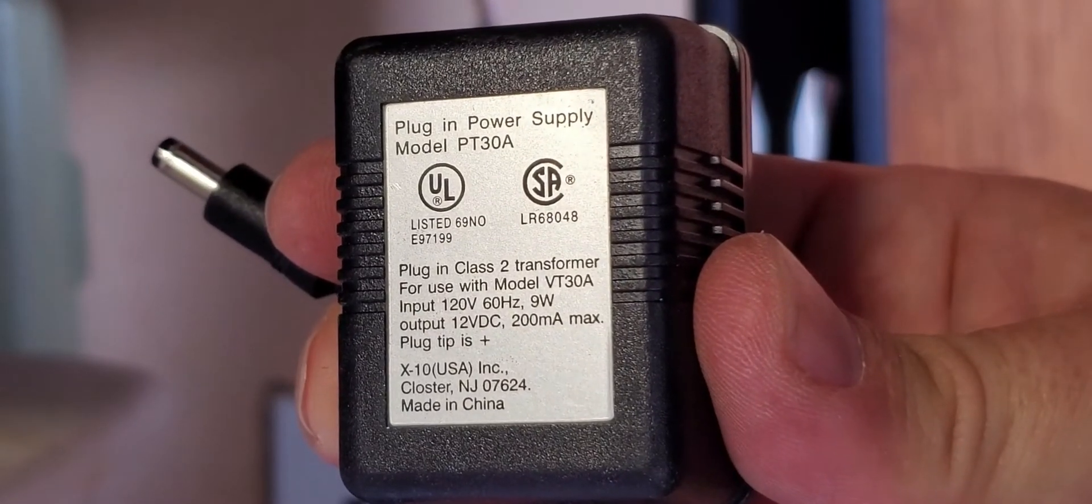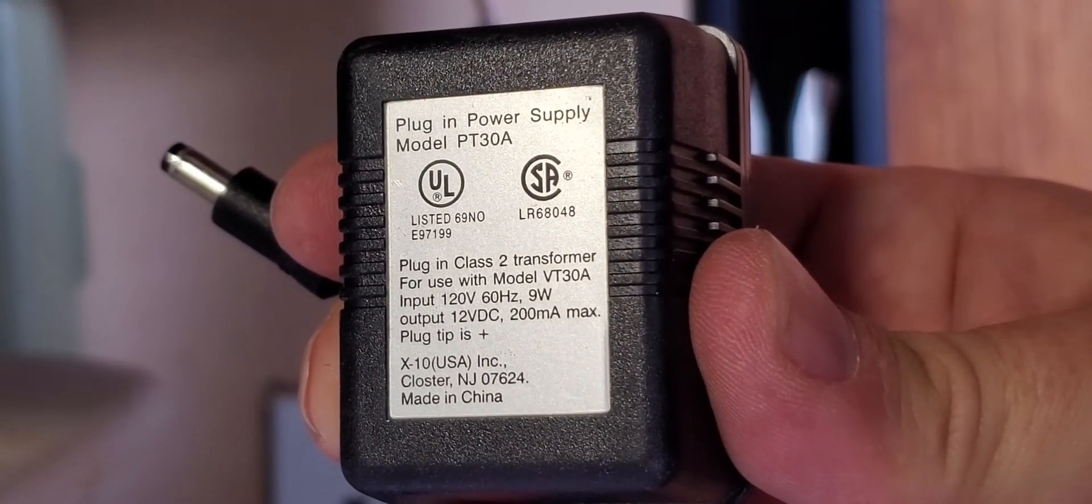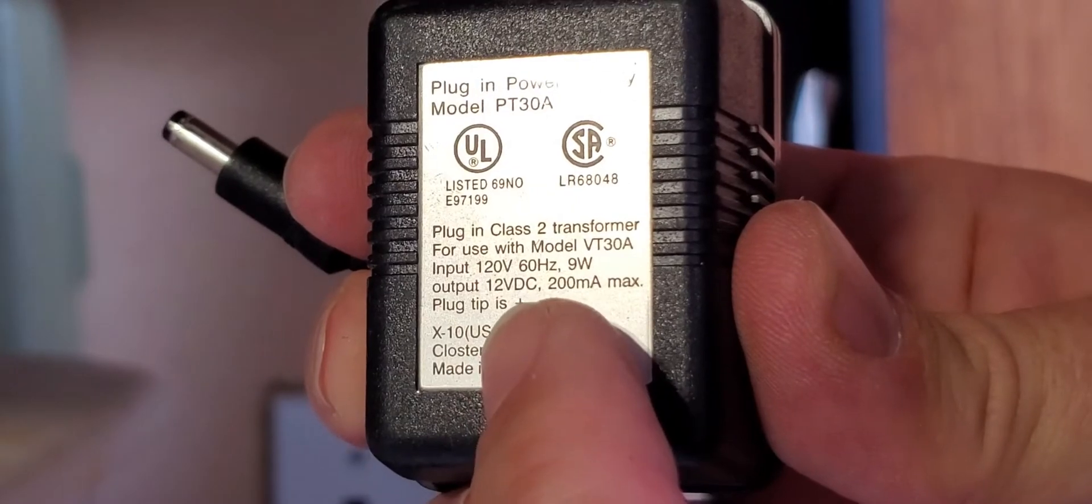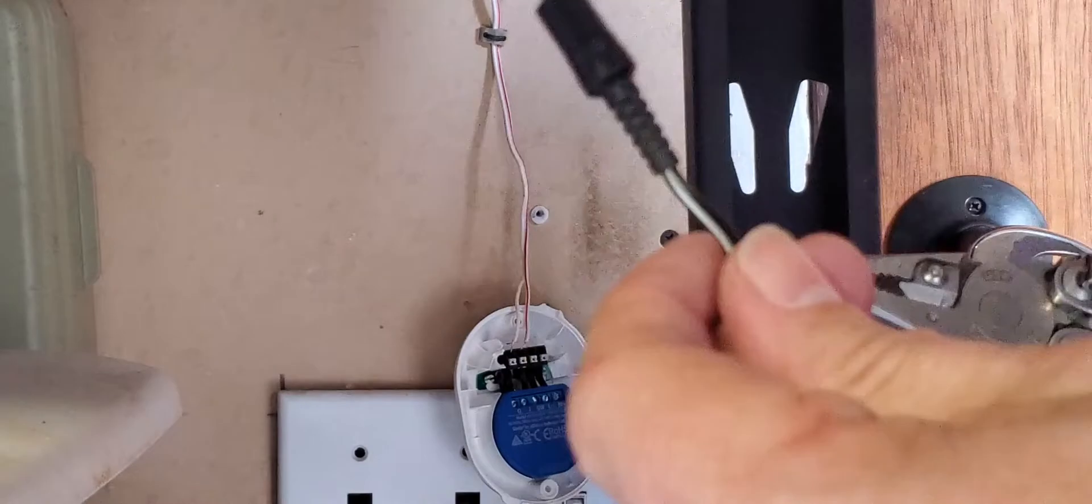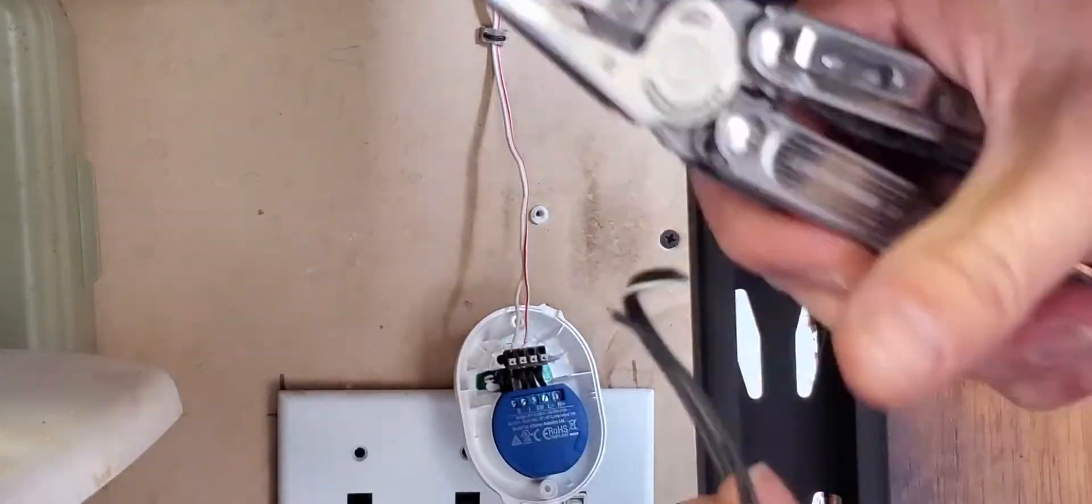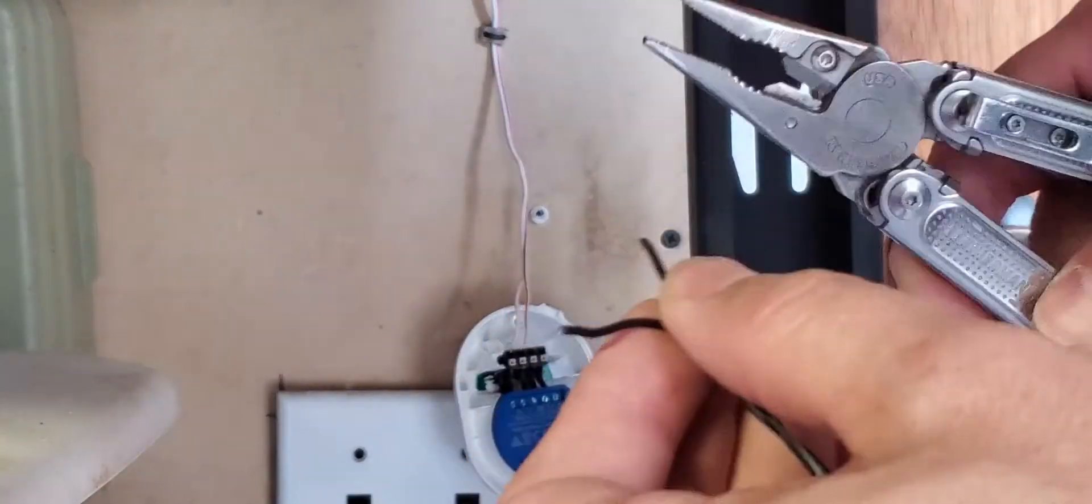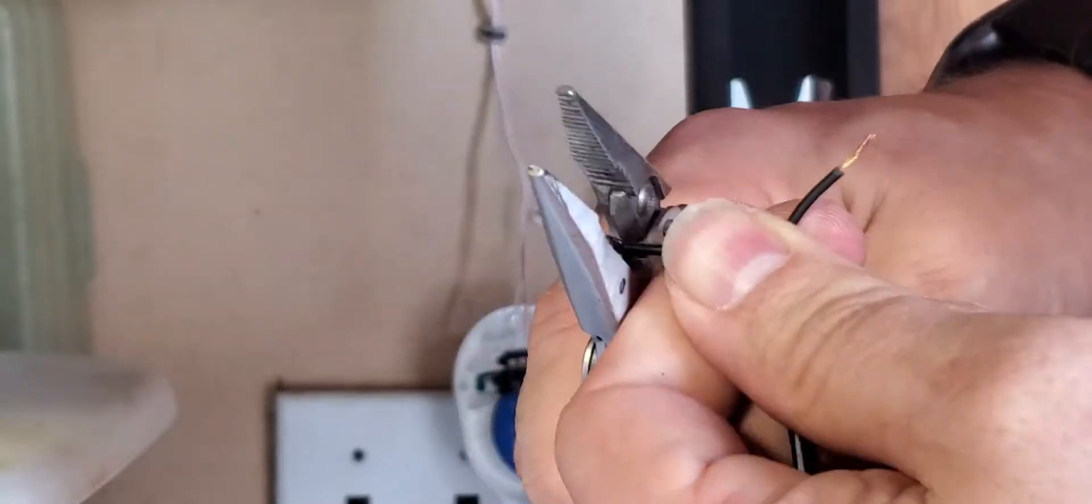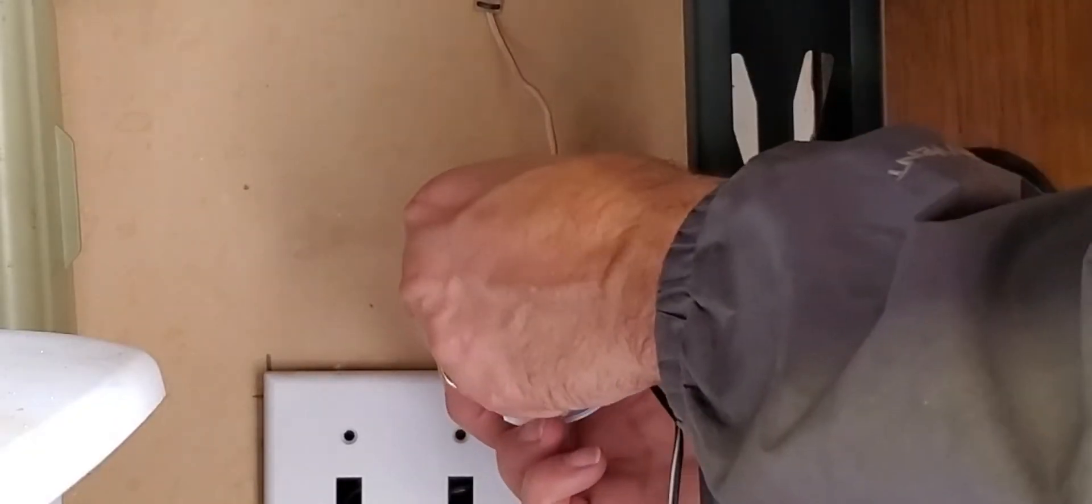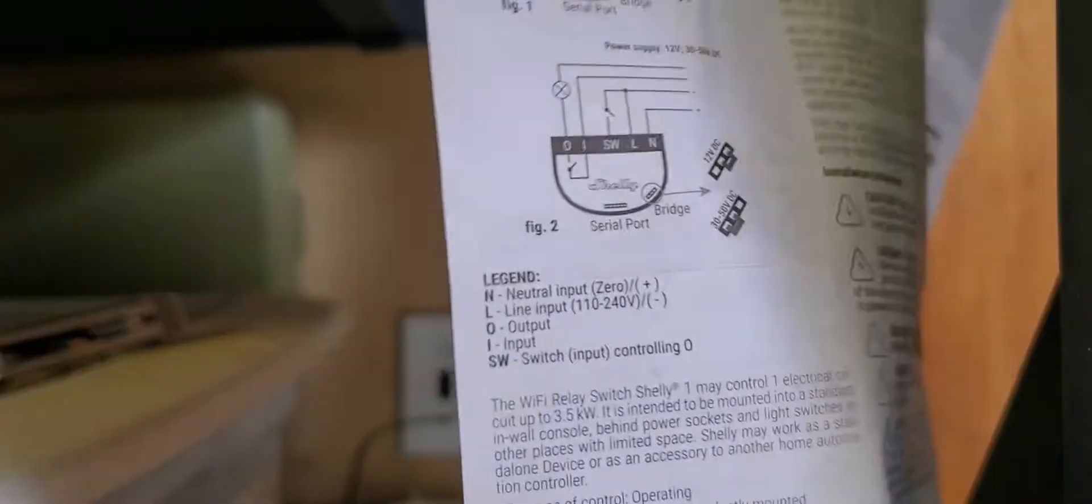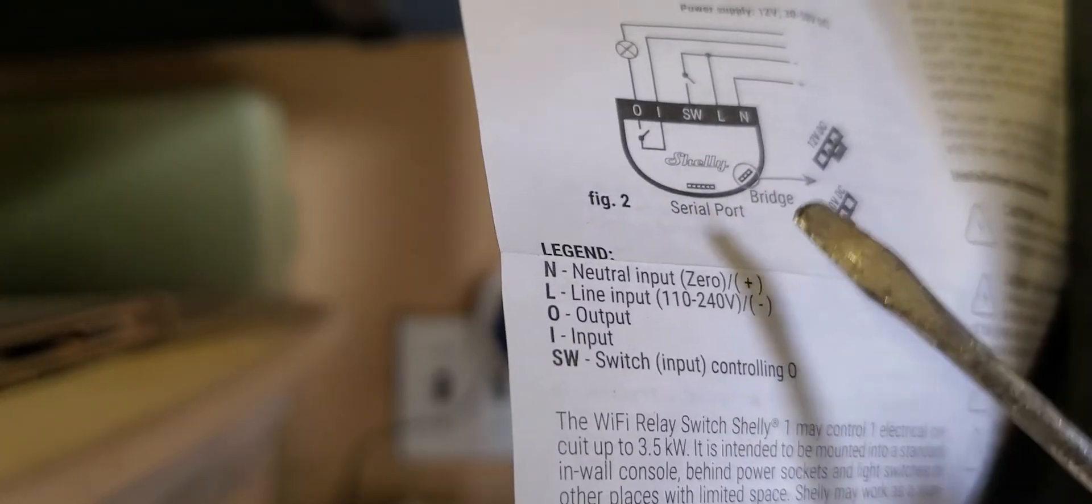Next, because this is a relay that can use AC or DC current, we're going to go with a 12 volt DC 200 milliamp power supply. You can use a bigger power supply if you want as far as the amperage, but this just goes to show that you don't need a whole lot of amperage to run the Shelly one. Here we stripped the wires from the power supply and we're going to connect those to the positive and the negative terminals on the Shelly one.